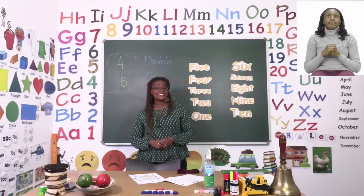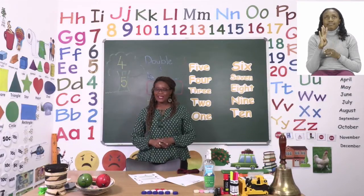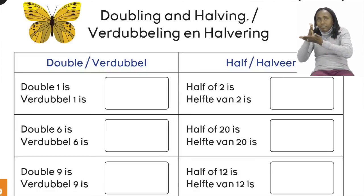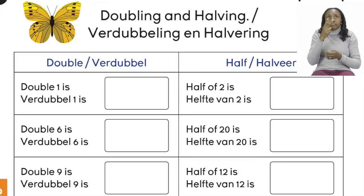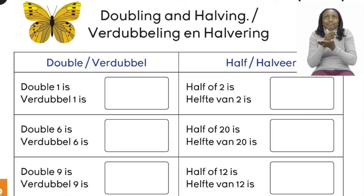Now let's continue our lesson boys and girls by going to page four. On page four we are going to be doing some doubling and halving. On one side we can see that we have to double. Remember doubling is when we make it more. And then on the other side we have to half it. So we're going to do the first two together. Let's take a look at the board.